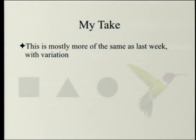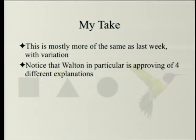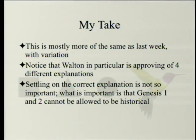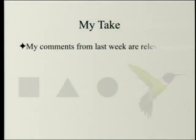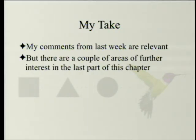This is mostly more of the same as last week with a little variation. Notice that Walton in particular is approving of four different explanations — two from last week, two from this week. Settling on the correct explanation is not so important. What is important is that Genesis 1 and 2 cannot be allowed to be historical — because if they are historical, then we have to disagree with science, and they're not going there. The idea that God cannot do theophanies is ridiculous. Abraham, Elijah, Moses, and all the prophets experienced theophanies. Adam had been sinless before the Genesis 3 incident, so there's no reason for God not to show his face.